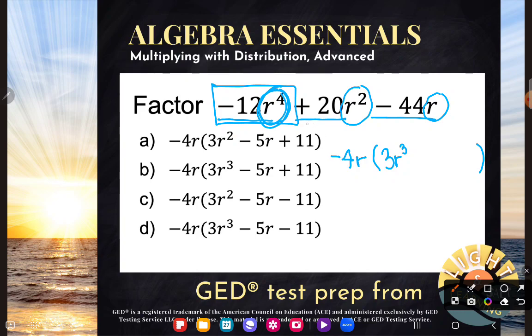Let's now factor that negative 4r out of the second term, positive 20r squared. So positive 20 divided by negative four is going to give me negative five. And I had two r's multiplying, and I'm dividing out one. I'm factoring out one. I'll just have a single r. Lovely.